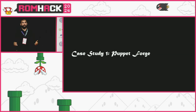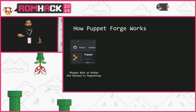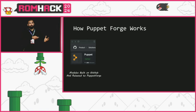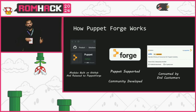For my first case study, I'm going to talk about Puppet Forge. Puppet Forge is a package repository for the Puppet infrastructure code system. The way Puppet Labs releases their official modules is by building them on GitHub and releasing them to Puppet Forge. There are community-developed modules and official ones — I'm focusing on the official ones, which include modules like the standard lib that other Puppet modules build off of.